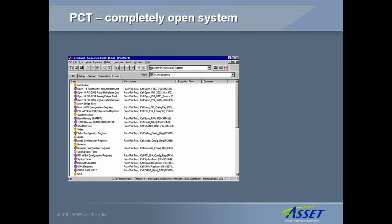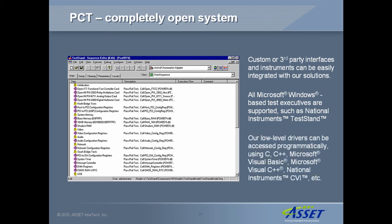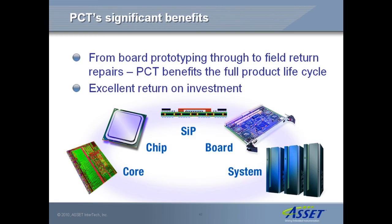PCT is designed with an open architecture to allow easy integration with any existing production test tools. It can be combined with other instruments, such as DSOs and DMMs, to create integrated test solutions. Its low-level test routines can be accessed and run from other test executives, such as National Instruments TestStand, as shown in this example. Or it can be programmed using standard programming languages.